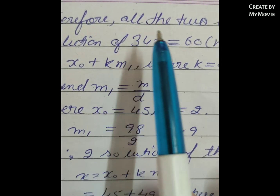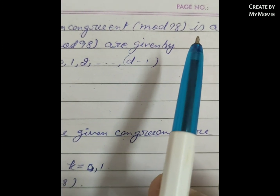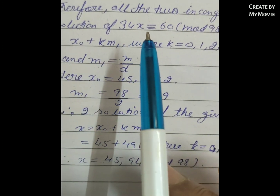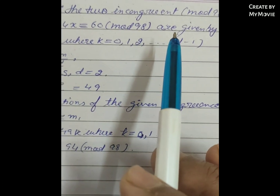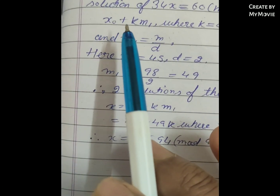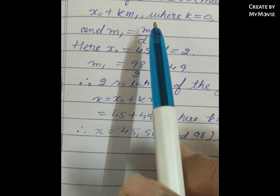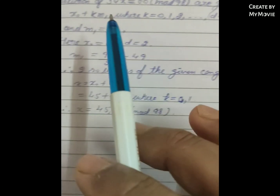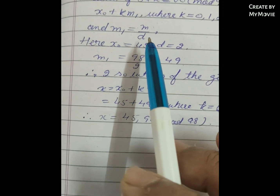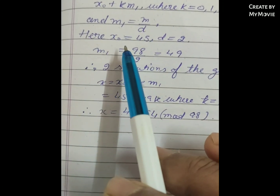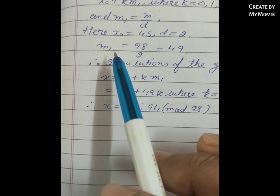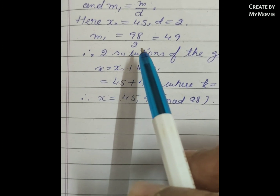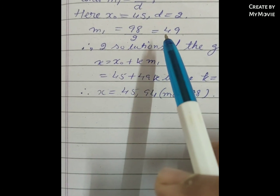Therefore all two incongruent solutions modulo 98 of 34x ≡ 60 (mod 98) are given by x₀ + k·m₁, where k = 0, 1, 2, ..., d − 1, and m₁ = m/d. Here x₀ = 45 and d = 2, so m₁ = 98/2 = 49.